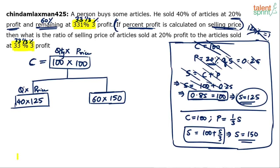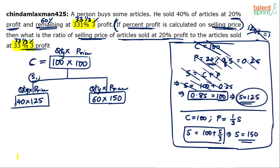Now, what is the actual question? Find the ratio of selling price of articles sold at 20% profit to articles sold at 33⅓% profit. He is asking for the ratio of total selling price of the first set to total selling price of the second set. Selling price of first set and selling price of second set — we need this ratio. Find the ratio of selling price of articles sold at 20% profit to articles sold at 33.33% profit.